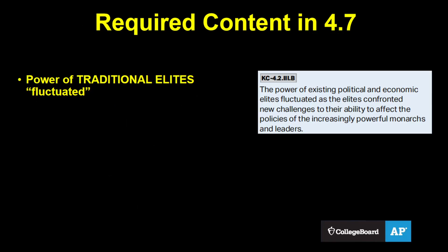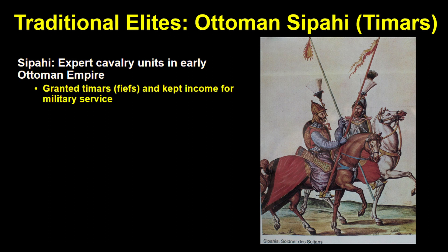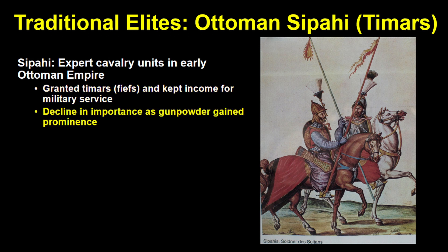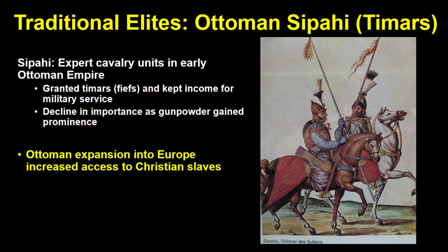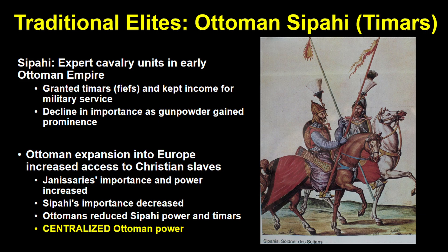Finally, we need to talk about traditional elites whose power fluctuated in this period. The Ottoman Sipahi were expert cavalry units — the traditional military elites in the early days of the empire. They were granted large fiefs of land called timars and kept the income from these lands in exchange for military service. But as gunpowder became more important, the traditional value of cavalry decreased. As the Ottomans expanded into Europe and gained more access to Christian slaves, the power of the Janissaries increased while the importance of the Sipahi decreased. Reducing the Sipahi's power and timars was another way for Ottoman sultans to centralize their power.